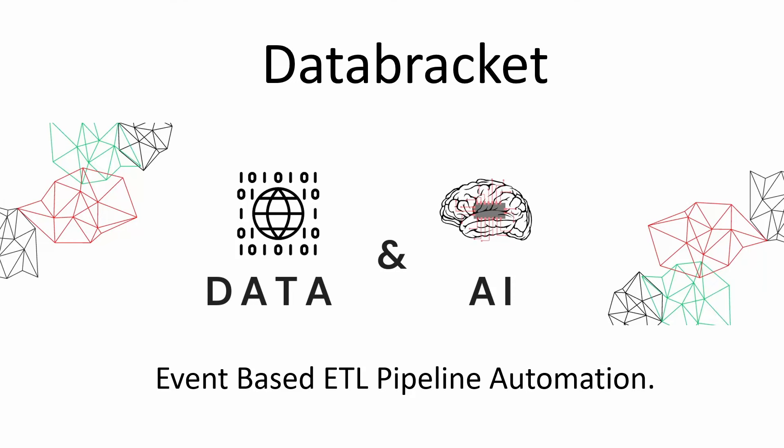Hello everyone, welcome back to Data Bracket. In this demo we are going to see how to build an event-based ETL pipeline that gets automatically triggered based on files landing in an S3 location. The use case we are going to build is: we'll have an S3 bucket and we'll automatically push files from directional sources or manually into this S3 bucket, and whenever a new file arrives, an event will get triggered.